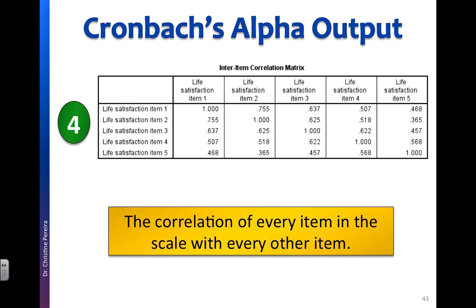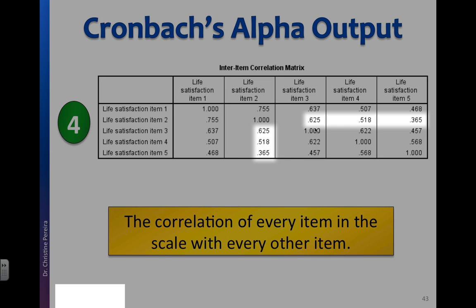Our next output is the inter-item correlation — the correlation of every item with each other. For example, the second row is item 2 correlated with item 1, and you can see it's quite strong at 0.75. You would expect all these correlations to be positive because all your questions should be worded in the same way — all positively or all negatively worded, going in the same direction. The larger the value, or closer to 1, the stronger the relationship. Just like a regular correlation, you get 1s along the diagonal because it's the correlation of an item with itself. The table is also symmetric, so everything above the 1s is the same as everything below, meaning we only need to read one half.